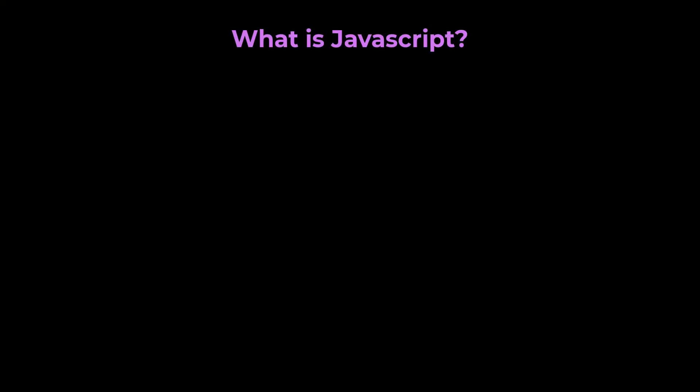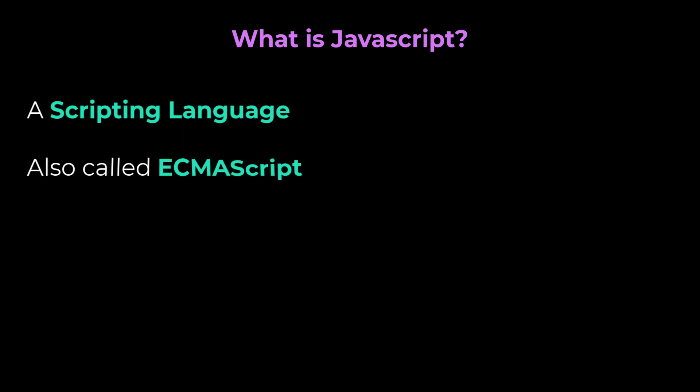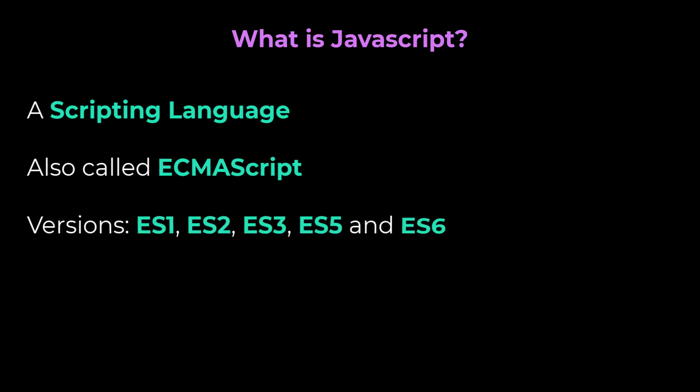What is JavaScript? JavaScript is a text-based programming language, in other words, a scripting language. JavaScript follows ECMAScript standard, and ECMAScript is the official name of JavaScript. There are many versions like ES1, ES2, ES3, ES5, and ES6.